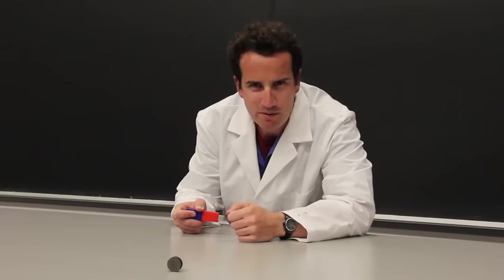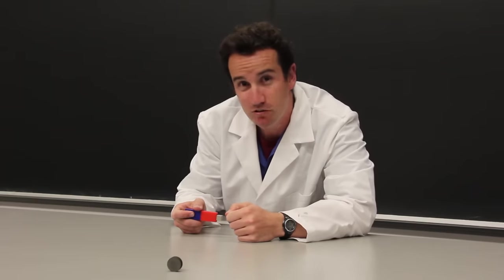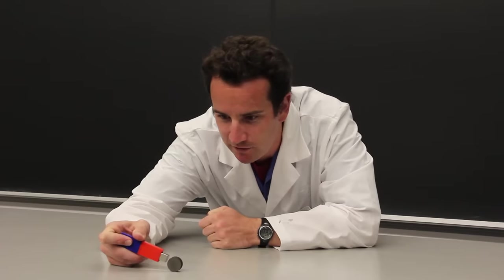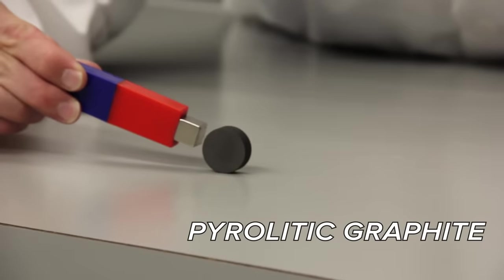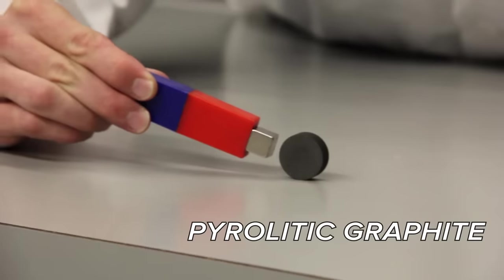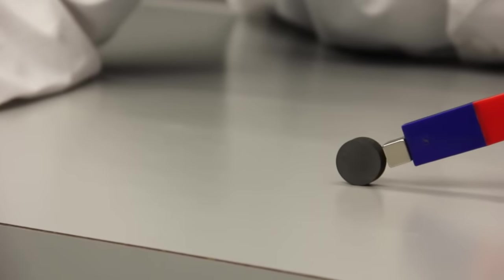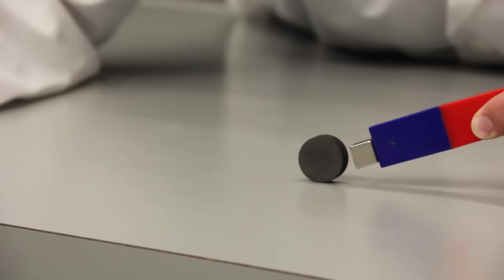An important example of a diamagnetic material is graphite. This specially made pyrolytic graphite is repelled by a magnetic field. Don't be confused. This is not static electricity or eddy currents. Graphite is repelled by a magnet, always, both by the north and south end.